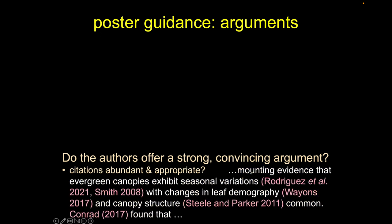So this is what it might look like. Looking at the bottom, we see: 'mounting evidence that evergreen canopies exhibit seasonal variations (Rodriguez et al. and Smith, 2008)' — those are two references supporting that statement. 'With changes in leaf demography' — that's a single reference. 'And canopy structure' — two authors from 2011. When it's a single author, it's the last name and year. Two authors, both last names and year. More than two, regardless of whether it's three, ten, or twenty, we use et al.